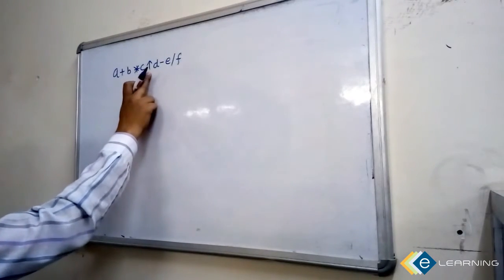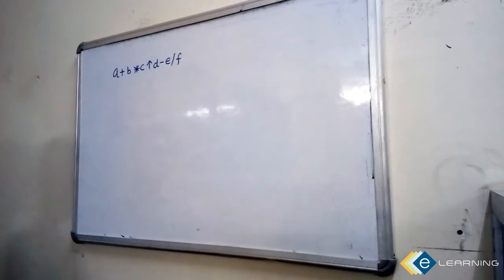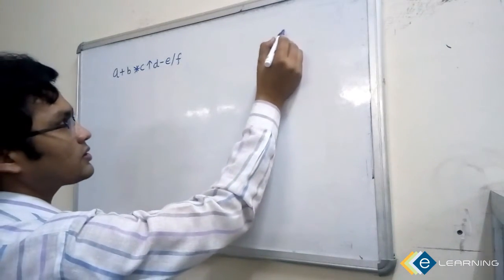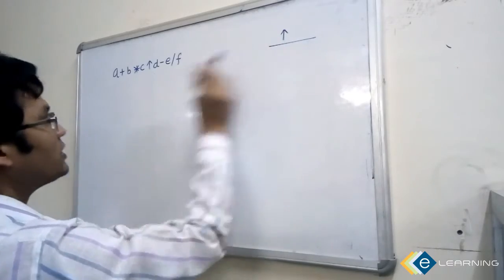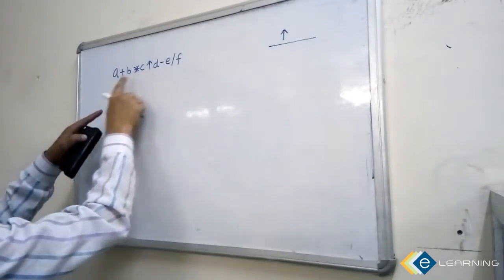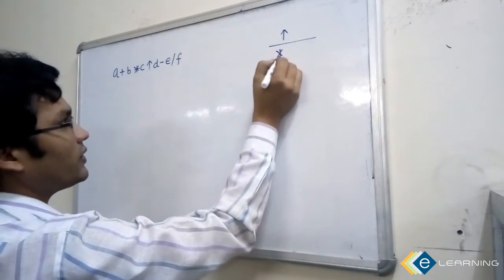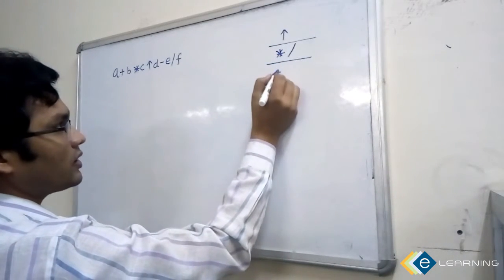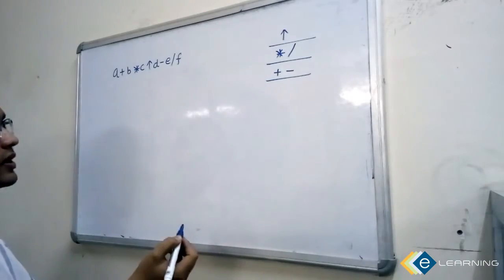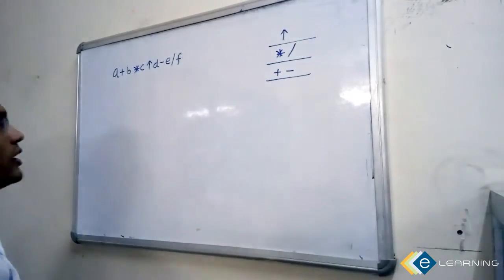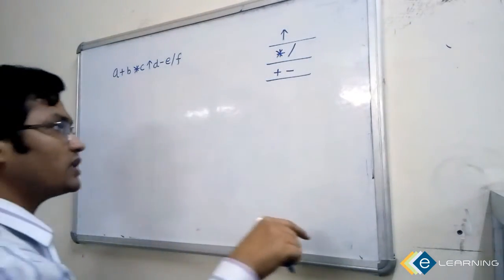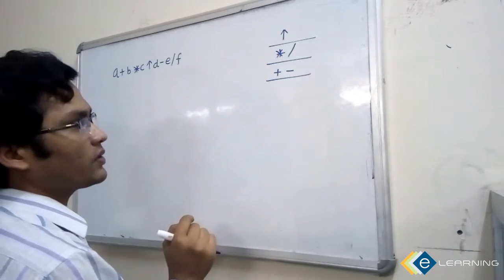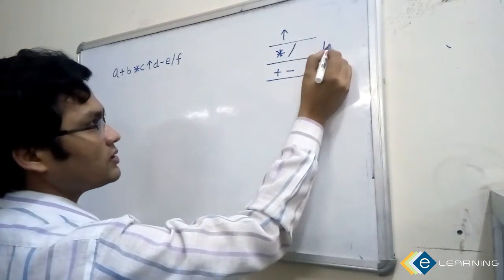The operators are plus, star, divide, power, and minus. In this expression, find out which operator has the highest precedence. Power has the highest precedence over all these operators. Star and divide have the same precedence, and plus and minus have the same precedence. Whenever two or more operators have the same precedence, associativity will tell you which operator to take first. The associativity is left to right.